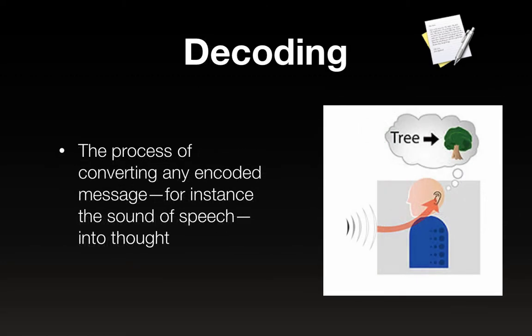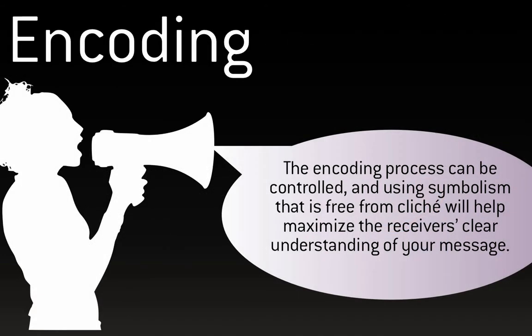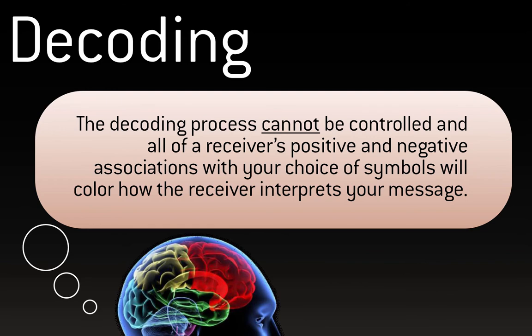Decoding is just what happens on the other end — the process of converting an encoded message, for example the sound of speech, into thought. The receiver does this. So sender encodes and receiver decodes. The encoding process can be controlled, and using symbolism that is free from cliché, distractions, and decorations will help maximize the receiver's clear understanding of your message. The decoding process cannot be controlled because it's happening outside of you. All of a person's positive and negative associations with your choice of symbols or words will color how the receiver interprets your message.